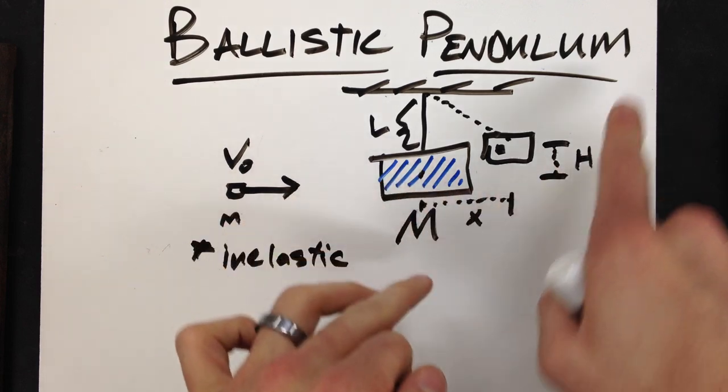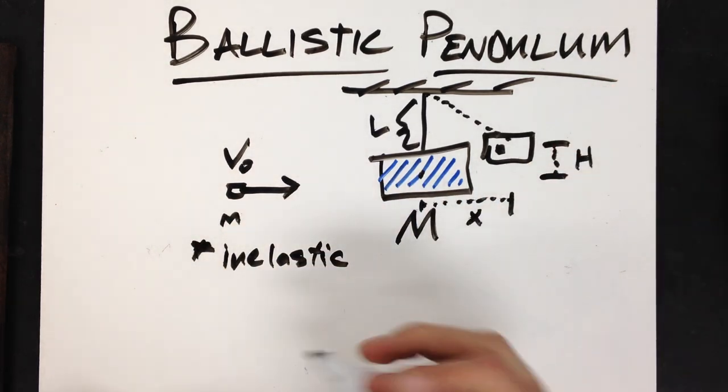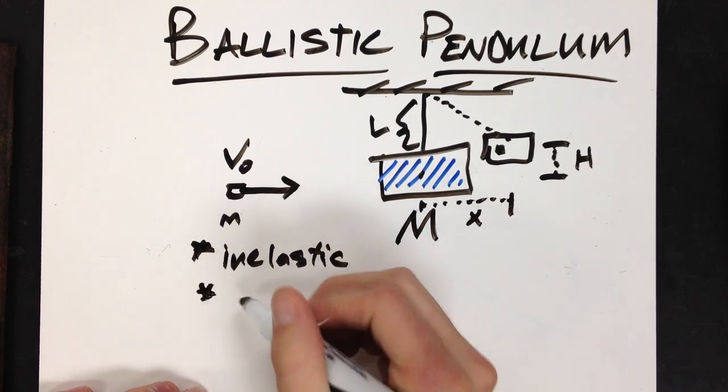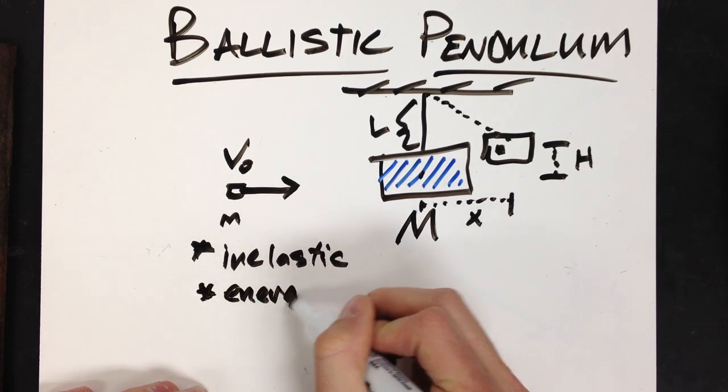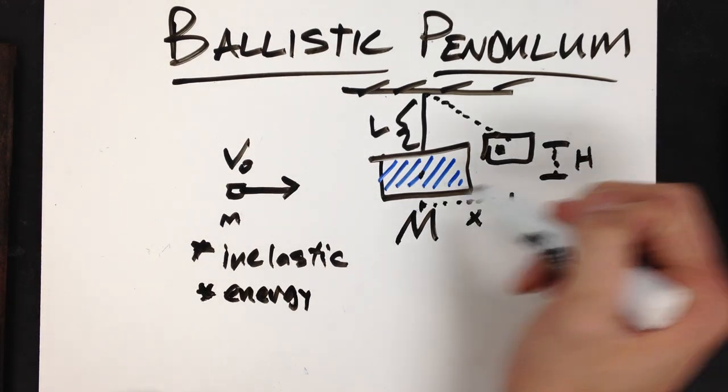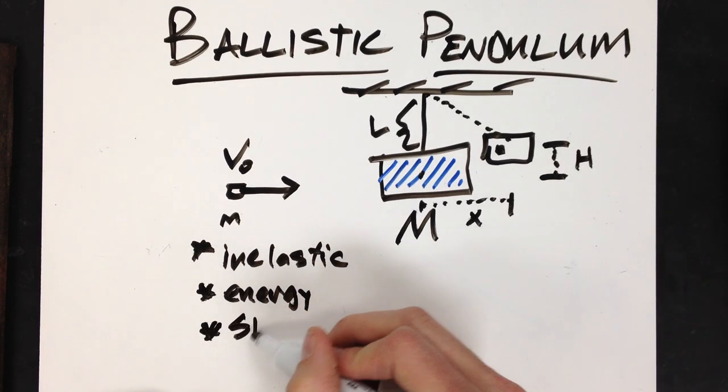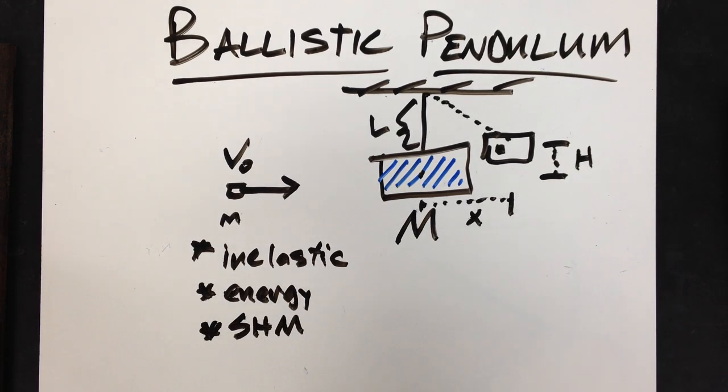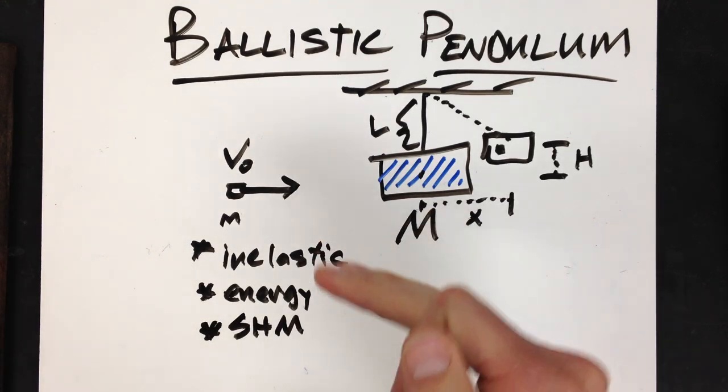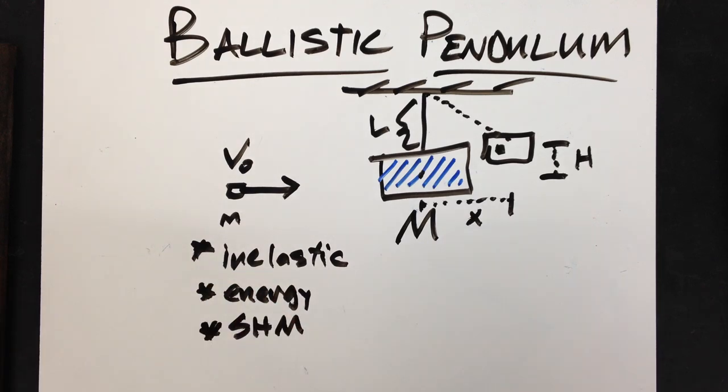Now, it hits and it raises up to a certain height, which means there's a gain in potential energy. So you've got energy to contend with. Now, it's going to hit, embed itself, and swing back and forth. So you've also got an element of simple harmonic motion. So we're going to tackle these piece by piece and investigate how each variable is related to the other.